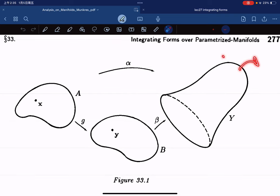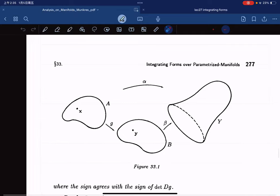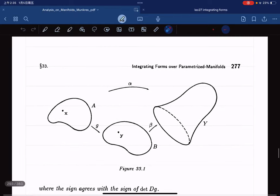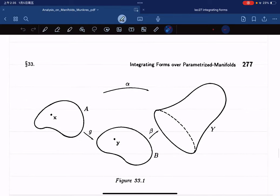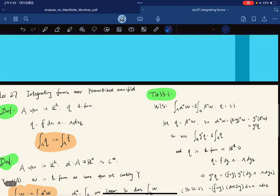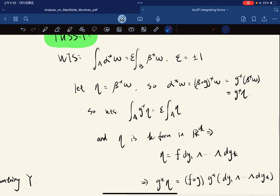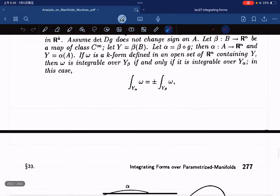And omega, omega is a form. Okay? Okay. Now with this one, we want to show that this is equal to this, right?